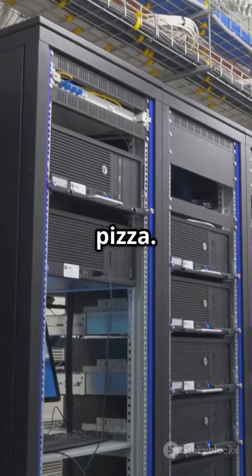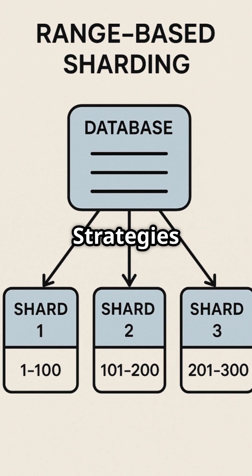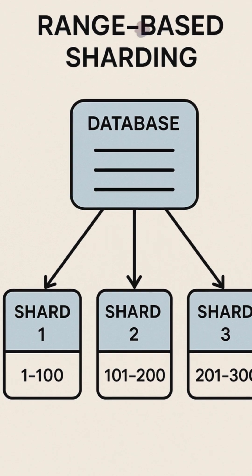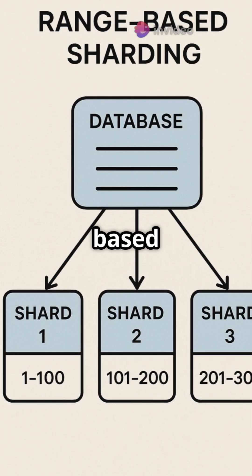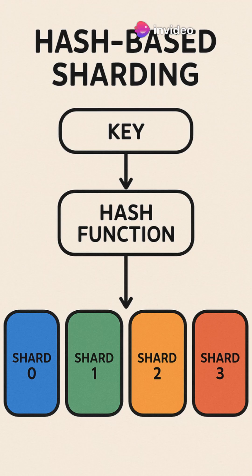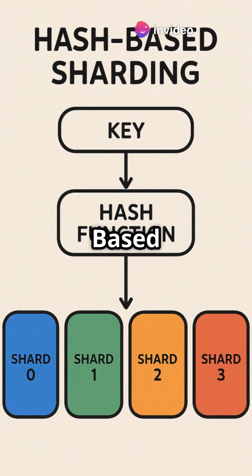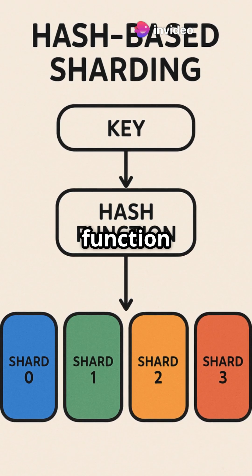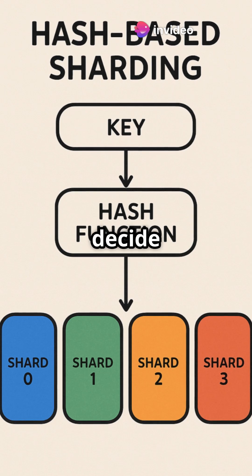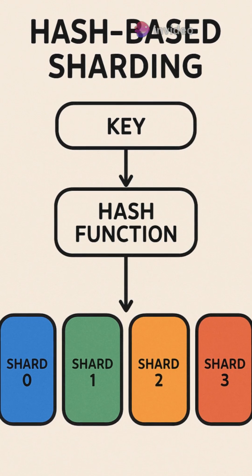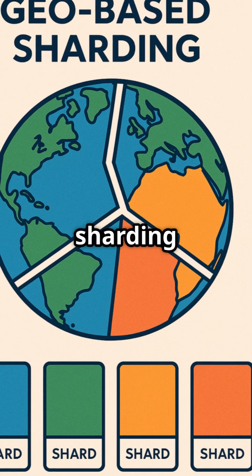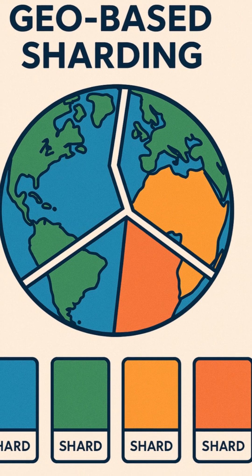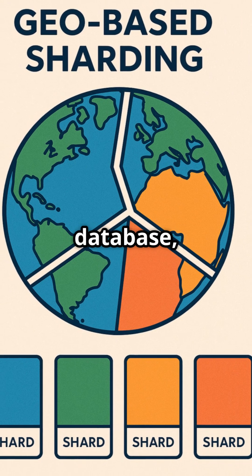Common sharding strategies include range-based sharding, which splits data based on ranges; hash-based sharding, which uses a hash function on a key to decide the shard; and geo-based sharding, which does sharding based on location.